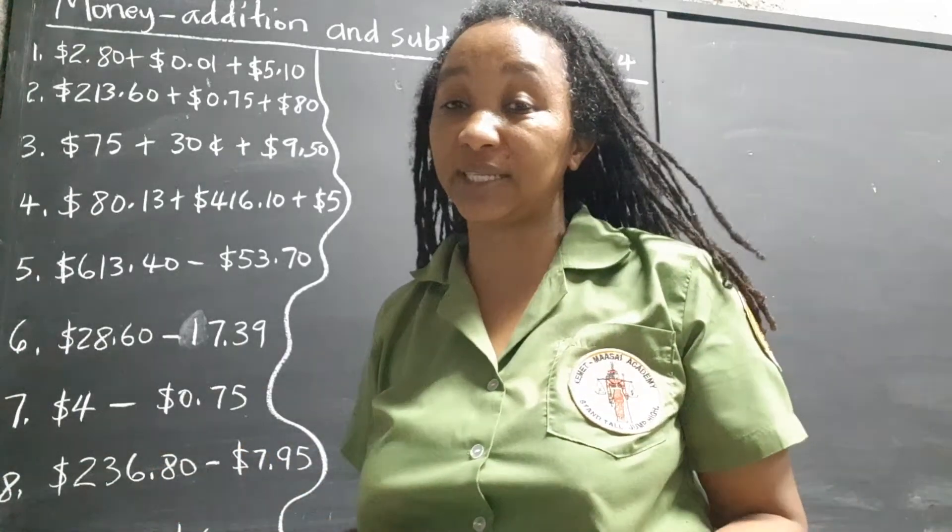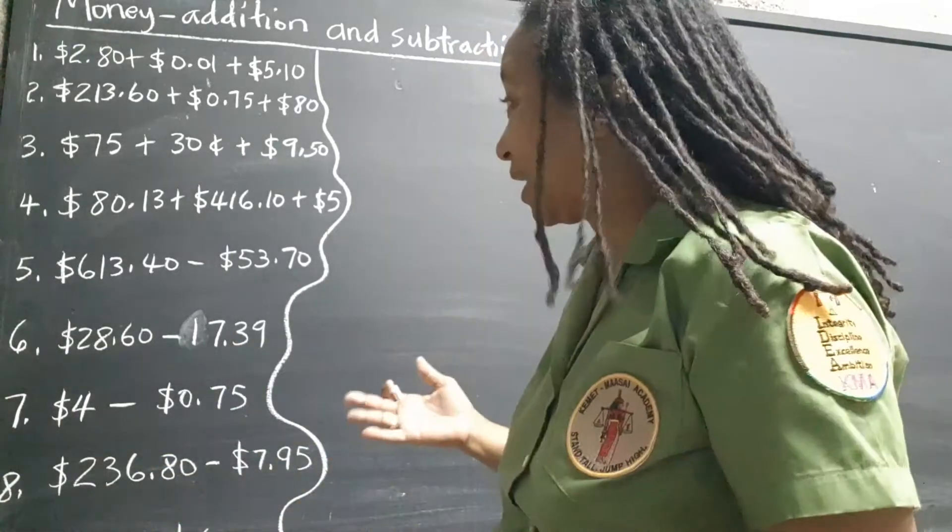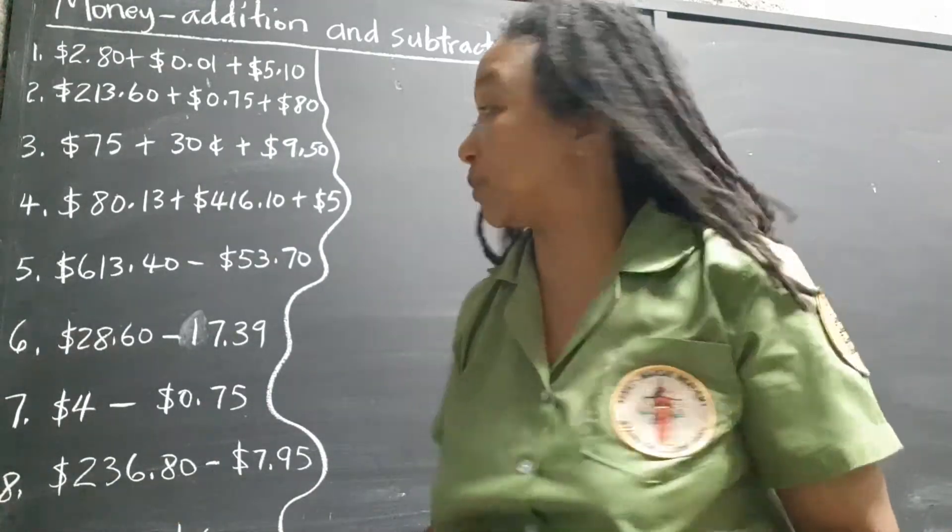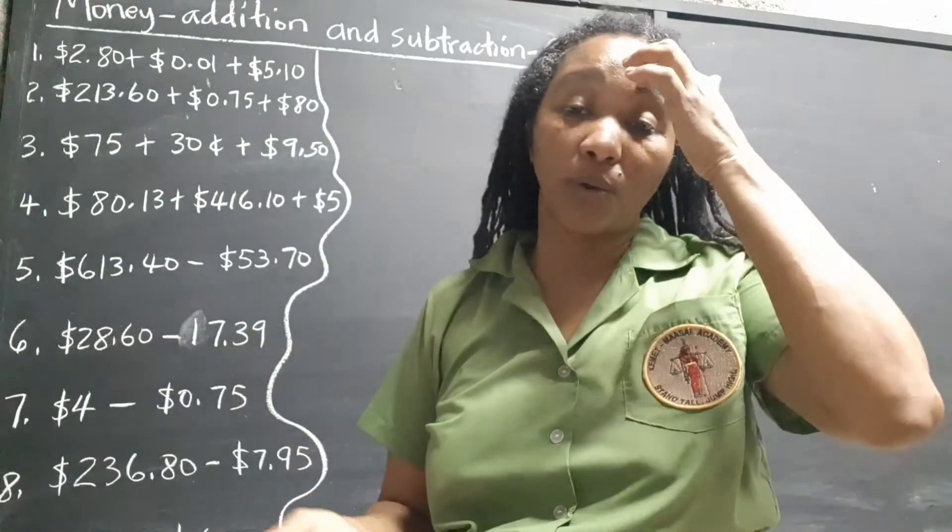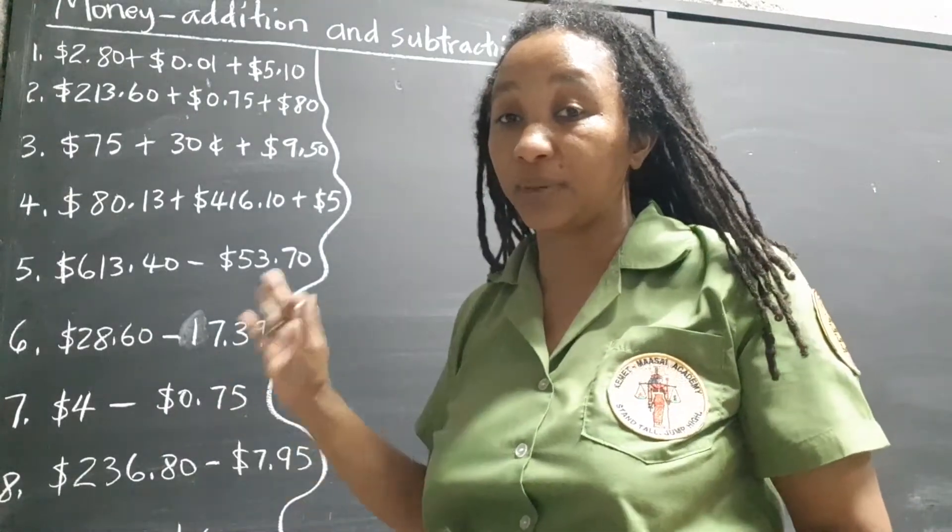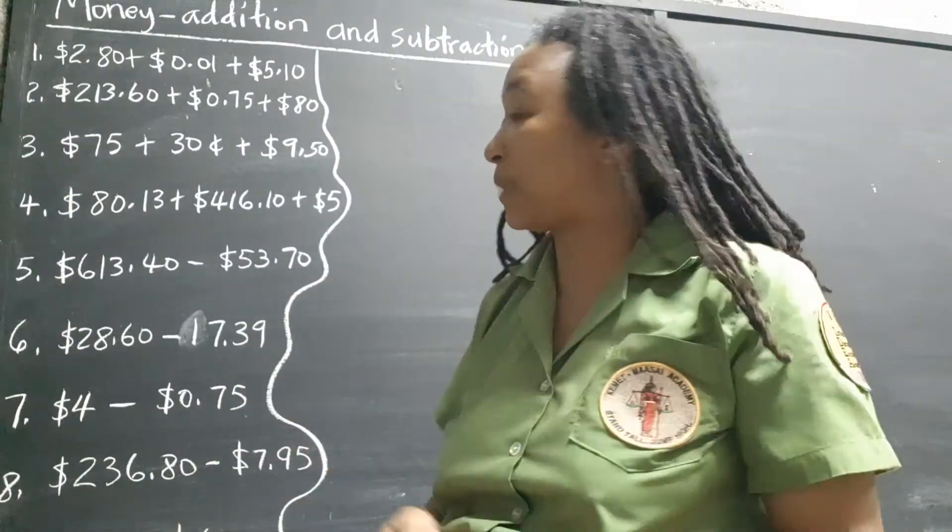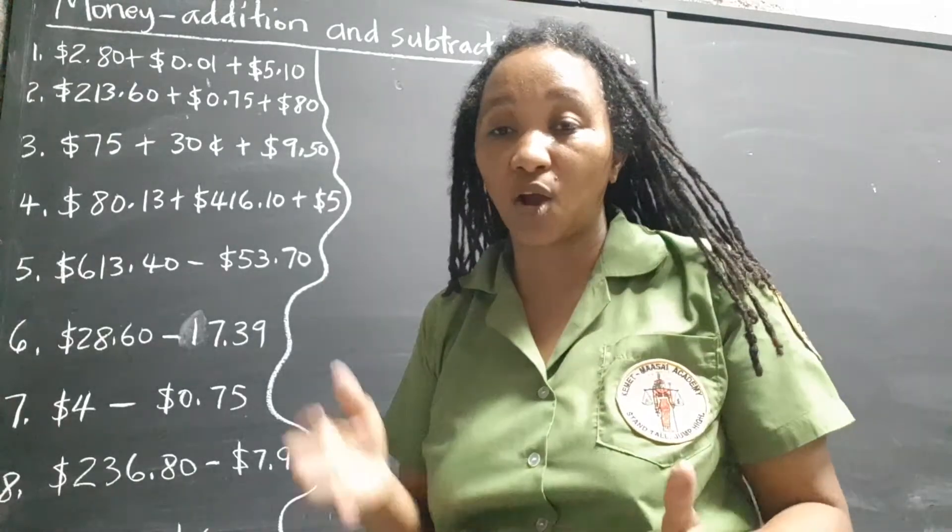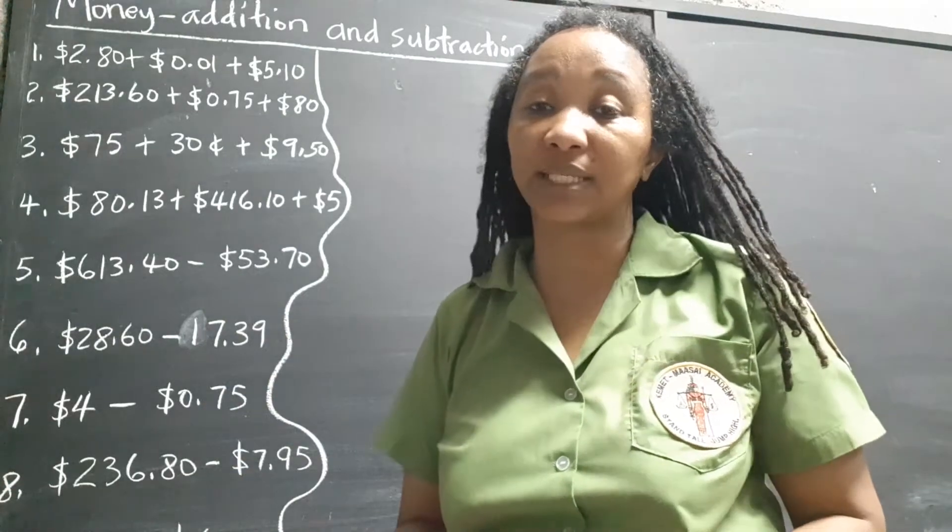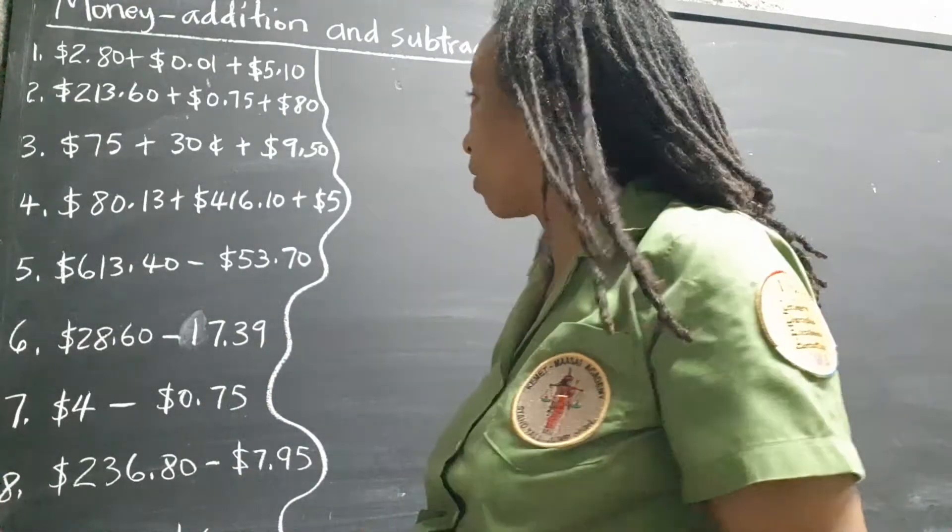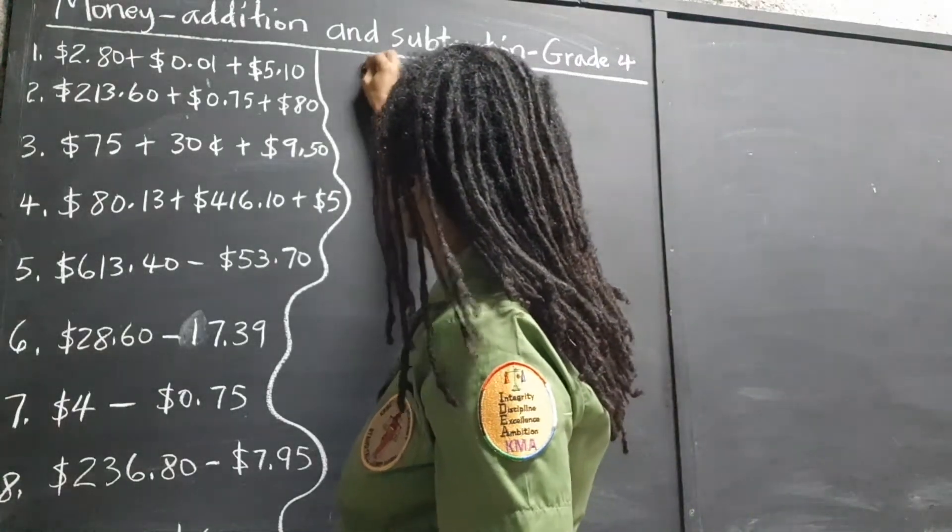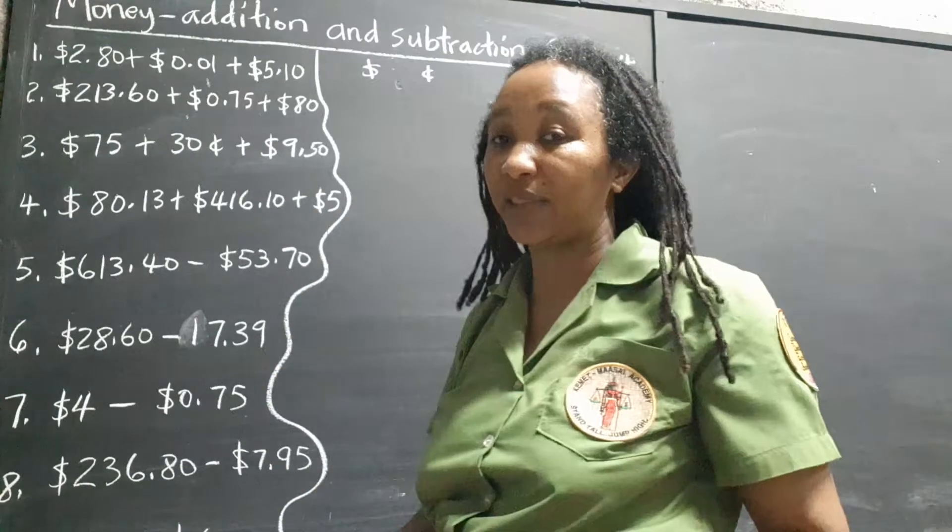We add and subtract normally using the place value of the decimal system. So we don't have to worry about changing units. It's already in the base 10 system. So we simply have to line them up according to the place value and then we just go straight ahead and add and subtract as we would normally do. So we're going to put our dollars, cents sign at the top.